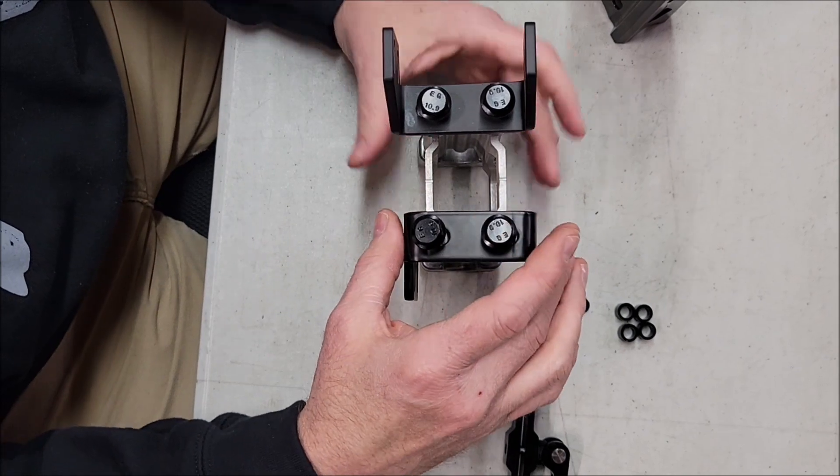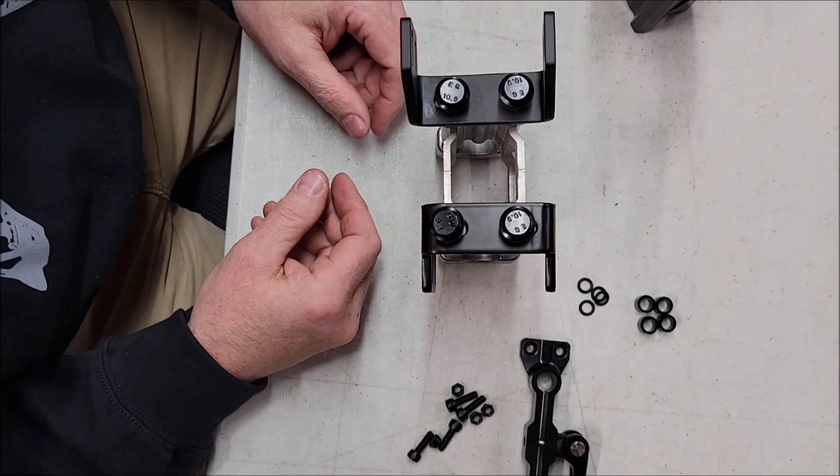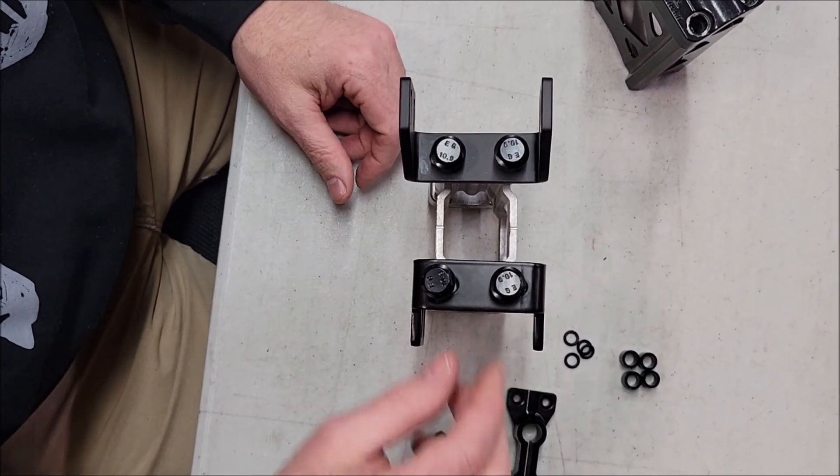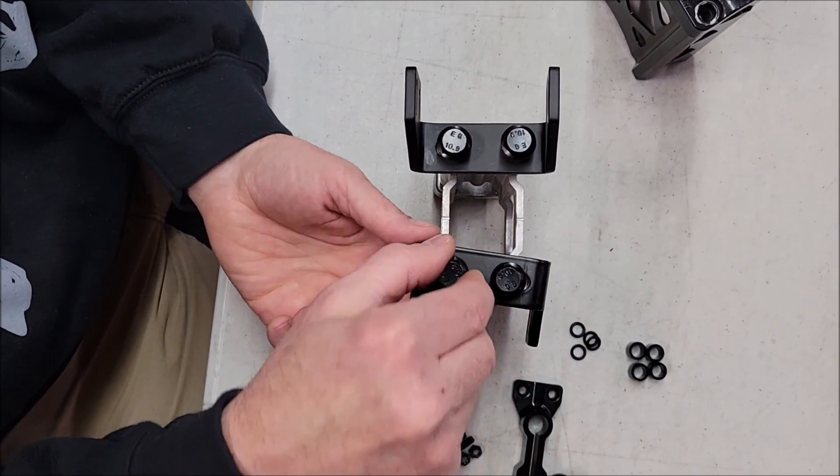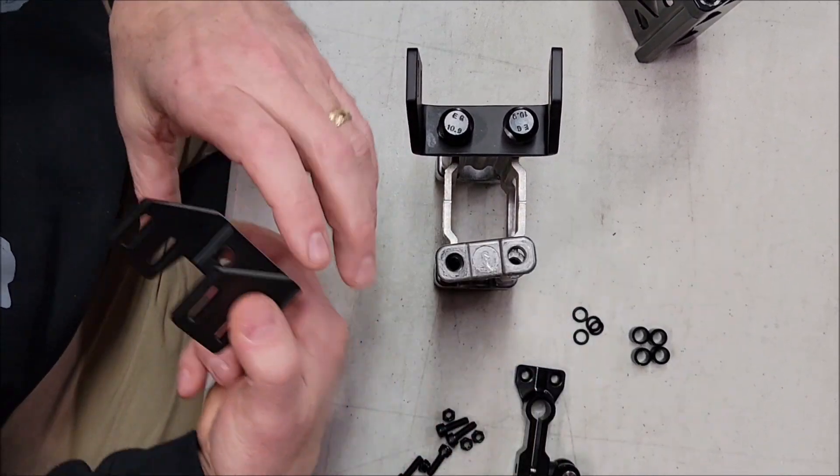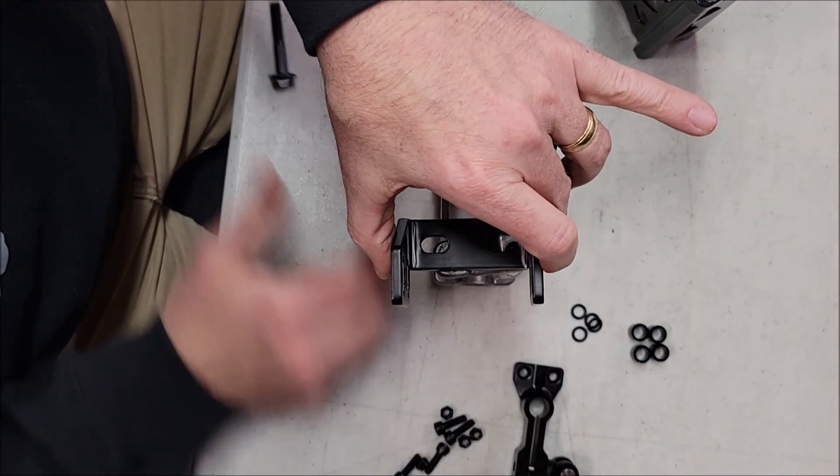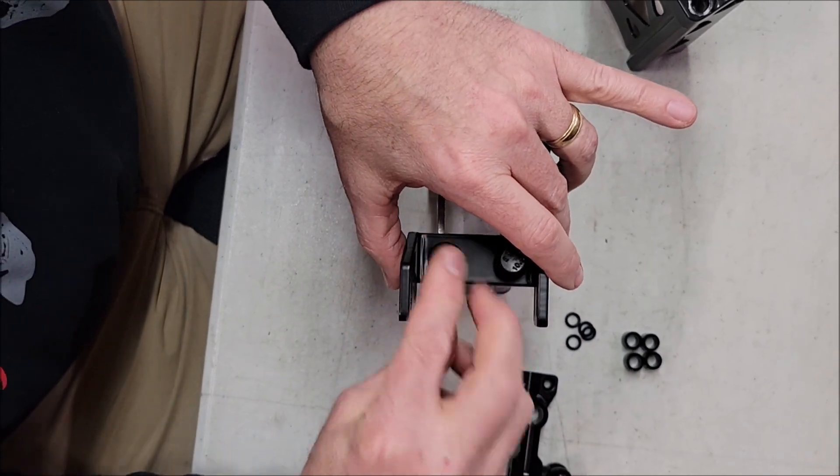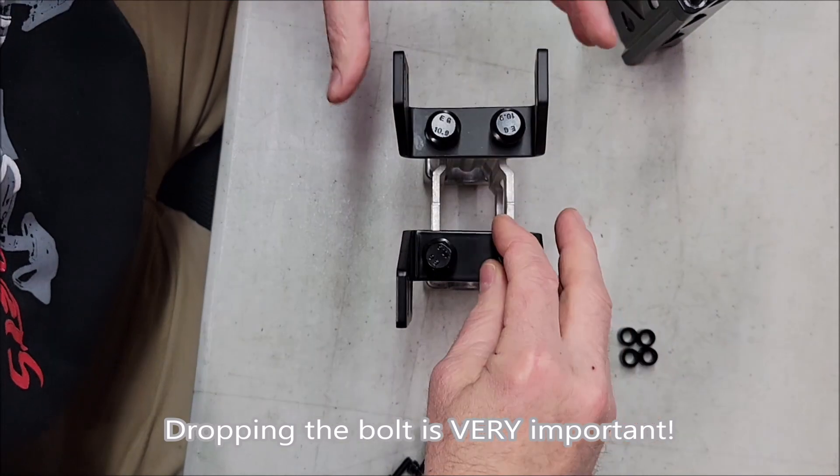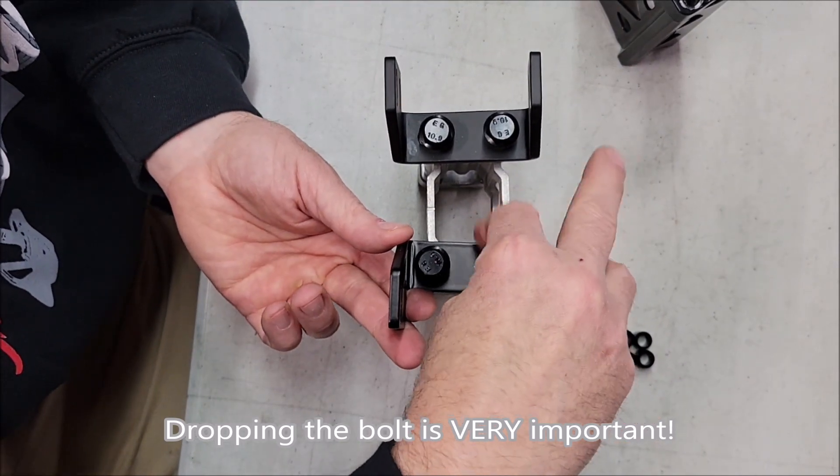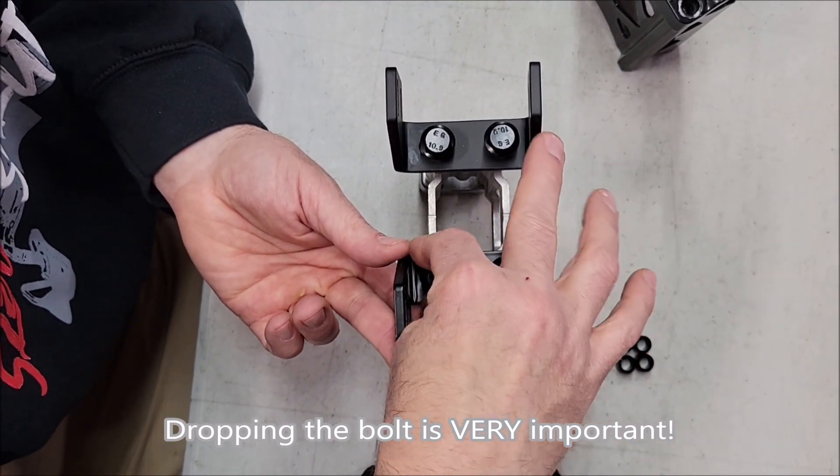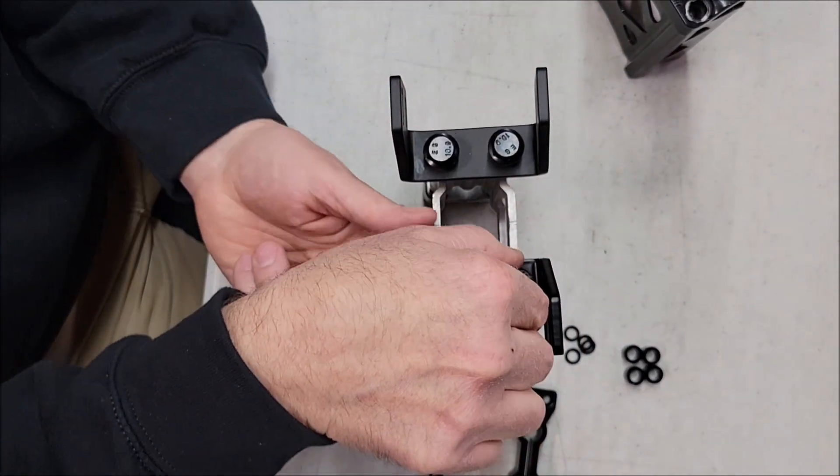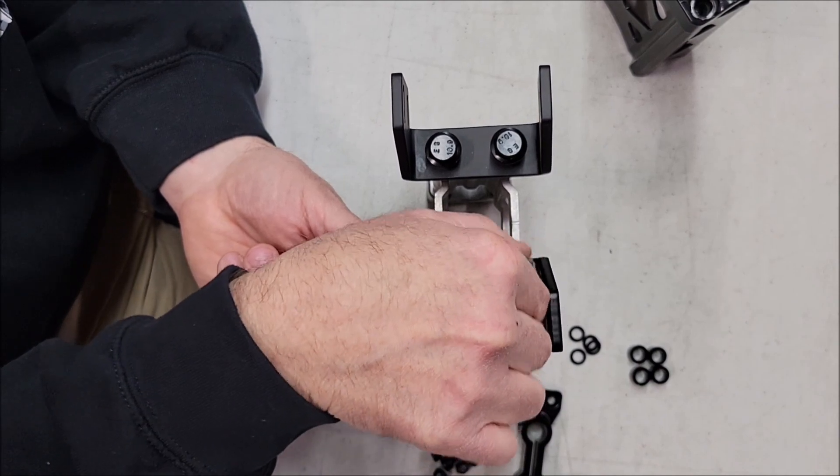By running it in the lift position, it gives you about an inch and a half more height. It all depends on your riser height. Once you've determined if you want lift position or standard, you're going to drop the bolt and tighten these back up to factory torque specs.